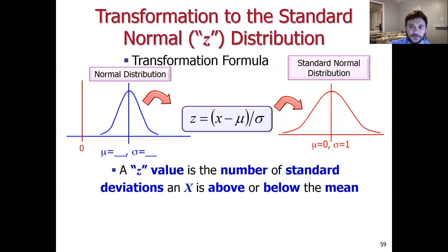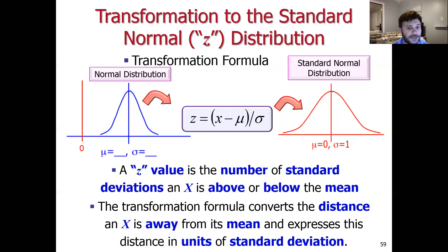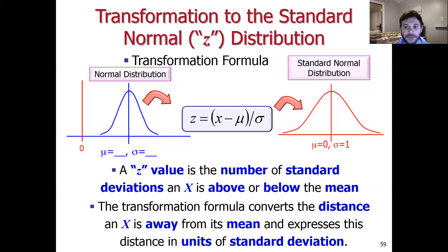The Z-transform is converting the distance X is away from its mean and expressing that distance in numbers of standard deviations. This is convenient because we can then apply the empirical rule: one standard deviation away from the mean on each side captures about 68% of the area under that probability density function. The empirical rule actually comes from the normal distribution.